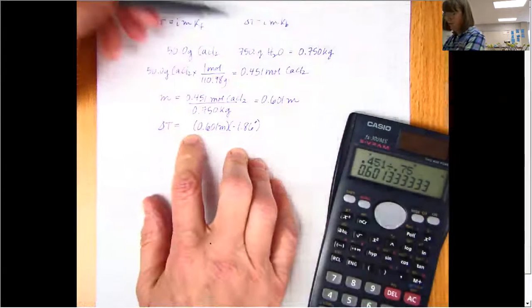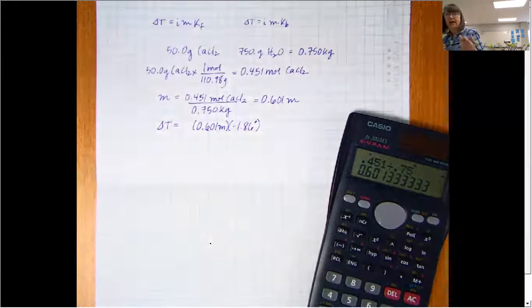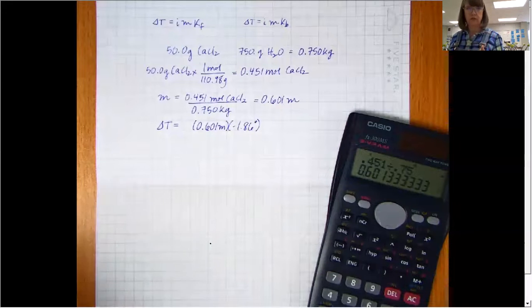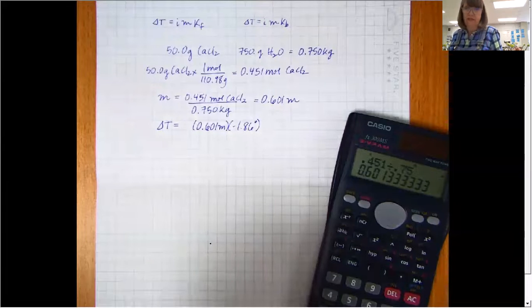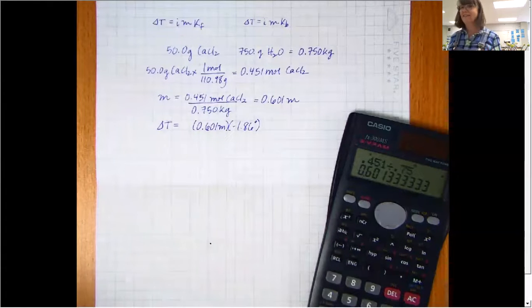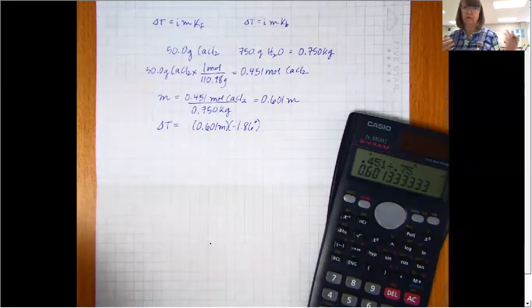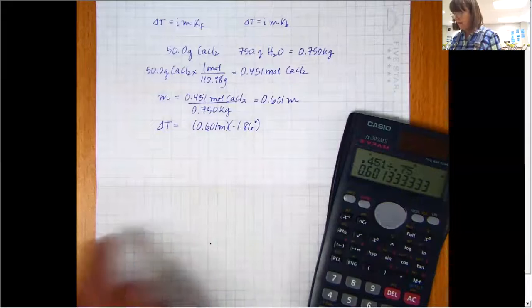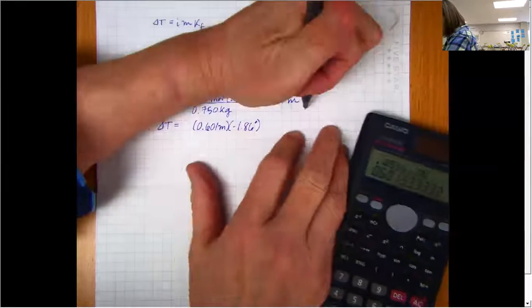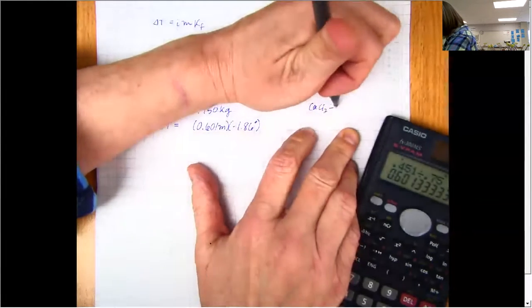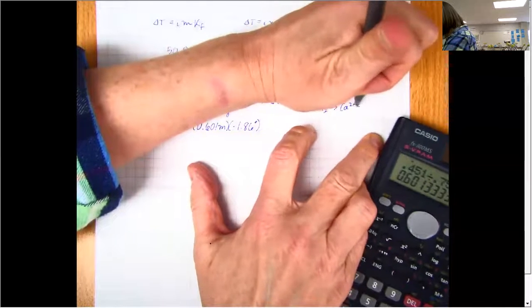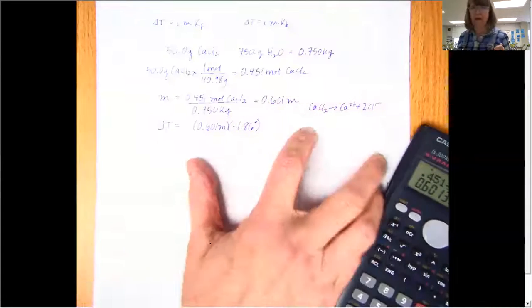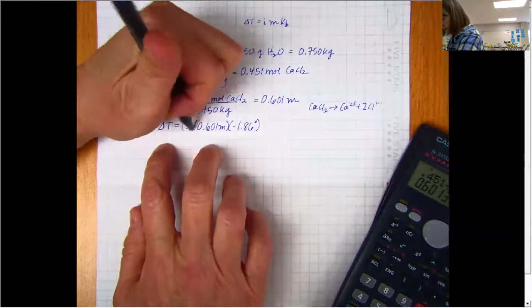And now I just need to figure out what my little i is. Well, the i is just based on how many solutes it's going to break down into. So if you had something like glucose, it would be 1, because glucose doesn't break down, it's a covalent compound. If you had NaCl, it would be 2, because sodium chloride dissolves into Na plus and chloride in water. For calcium chloride, the calcium chloride breaks down into a calcium plus 2 chloride ions. So my number is going to be 1, 2, 3, right here.